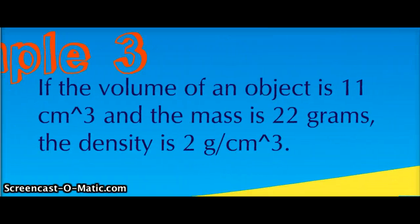Example number 3. If the volume of an object is 11 centimeters cubed and the mass is 22 grams, the density is 2 grams per centimeter cubed.